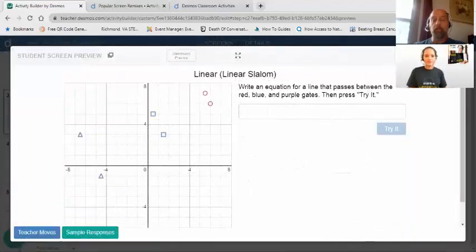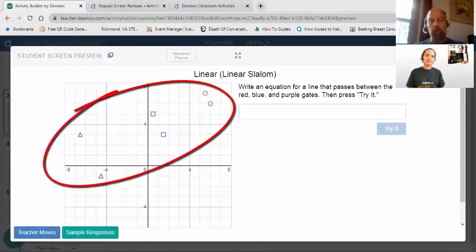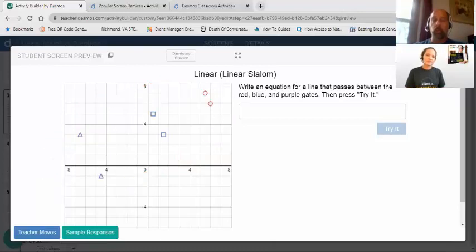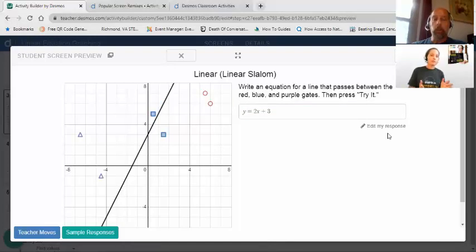Here's a linear slalom that they put in an equation, and their goal is to try to basically, quote unquote, ski between the purple markers, the blue markers, and then the red markers to see if they can get one single equation that goes through all of them. I could do something like y equals, let's see, let's do 2x plus, I don't know, what do you say, 3? Sure. We used 3 earlier, and it worked. Maybe it'll work again. Well, we made it through one gate, and I like how the gates gave us some color to give us confirmation that we were successfully between the gates.